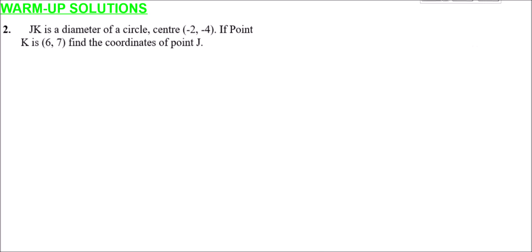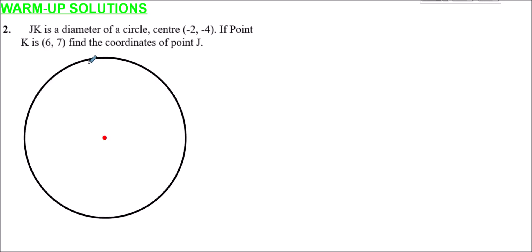Question two is almost the same. We have JK as another diameter of the circle, but now we've only been told one end of the diameter — K at (6, 7) — and the center of the circle at (-2, 4). We need to find the coordinates of point J, the other end of the diameter. We could use the midpoint formula, but let's approach it by drawing the circle and annotating what we know.